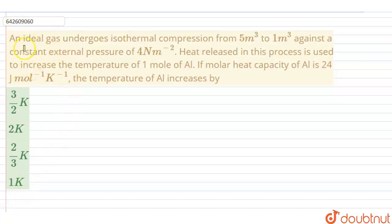The question says that an ideal gas undergoes isothermal compression from 5 meter cube to 1 meter cube against a constant external pressure of 4 newton per meter square. Heat released in this process is used to increase the temperature...